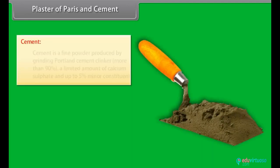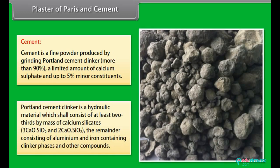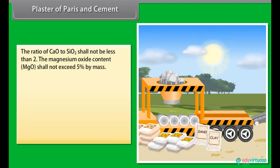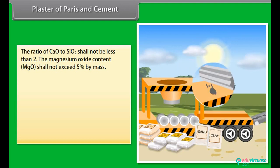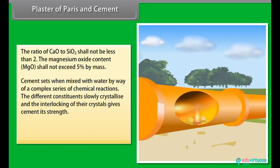Cement: Cement is a fine powder produced by grinding Portland cement clinker, more than 90%, a limited amount of calcium sulfate, and up to 5% minor constituents. Portland cement clinker is a hydraulic material which shall consist of at least two-thirds by mass of calcium silicates, the remainder consisting of aluminum and iron containing clinker phases and other compounds. The ratio of CaO to SiO2 shall not be less than 2. The magnesium oxide content shall not exceed 5% by mass.